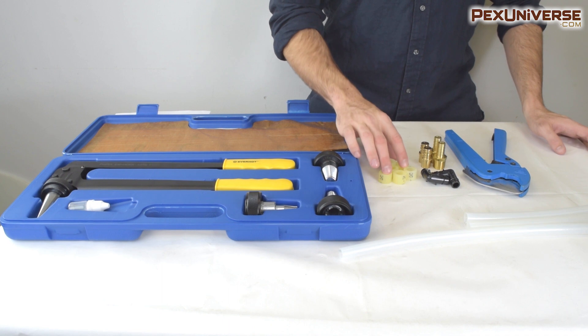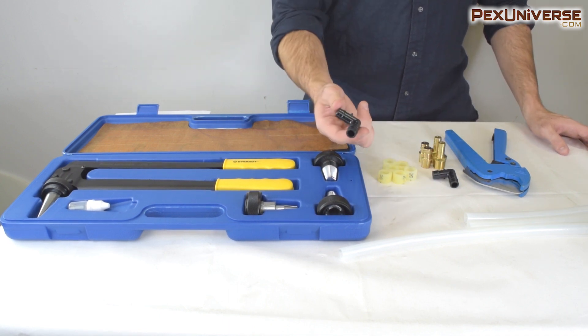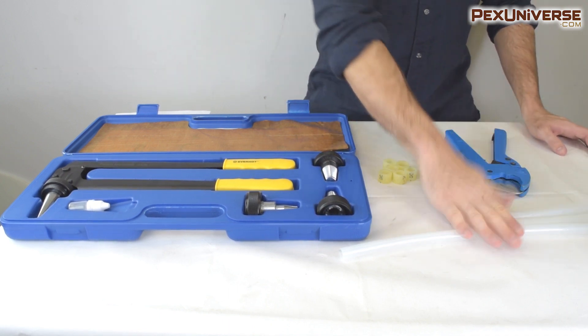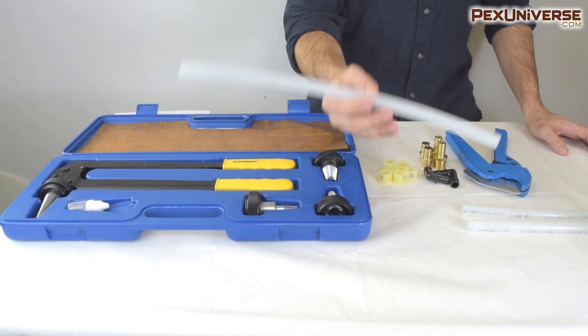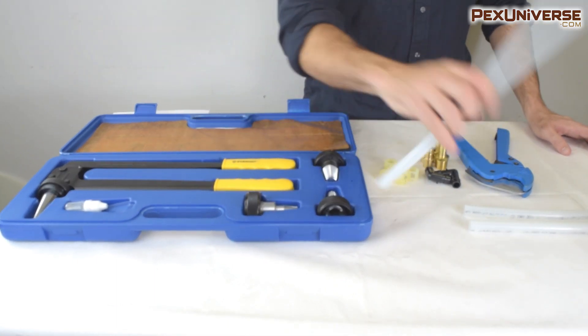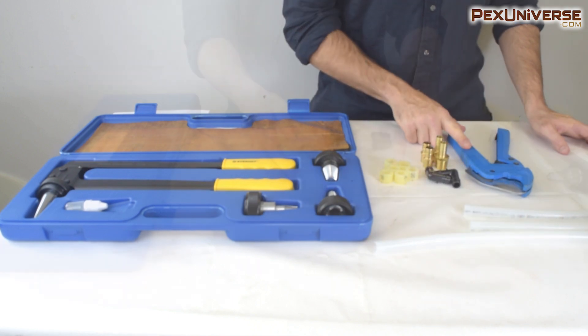These are expansion rings. Here's your expansion fittings - this is poly alloy and this is brass. PEX tubing. It has to be PEX A because PEX B will not fix itself after you expand it. And these are PEX tubing cutters.